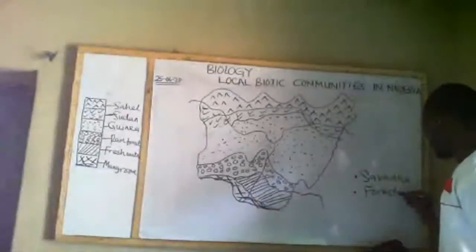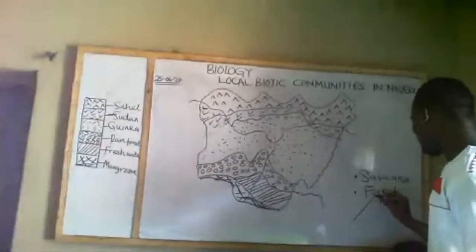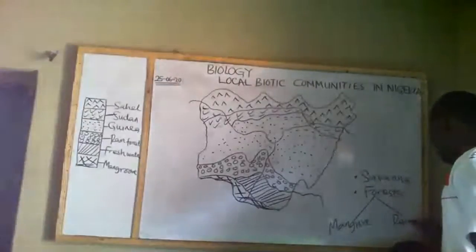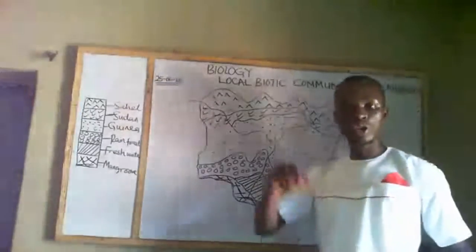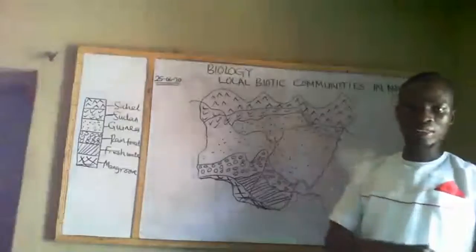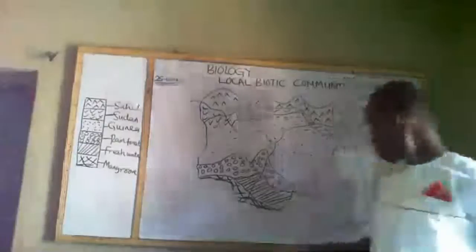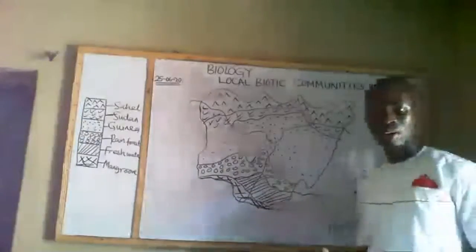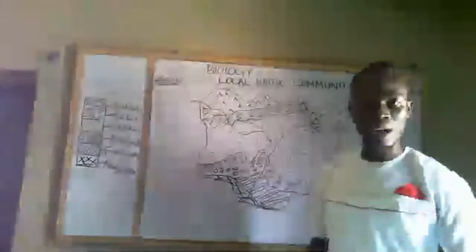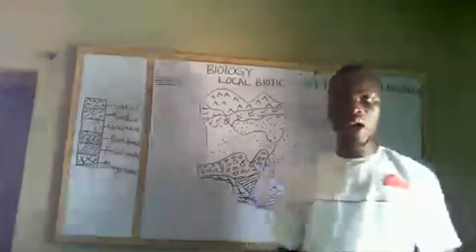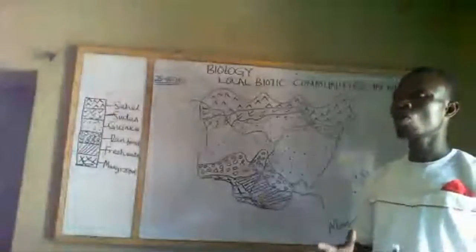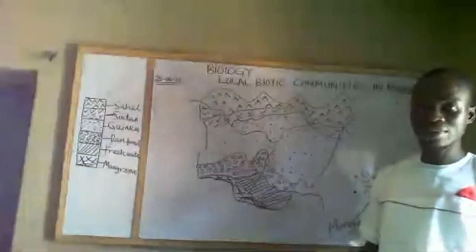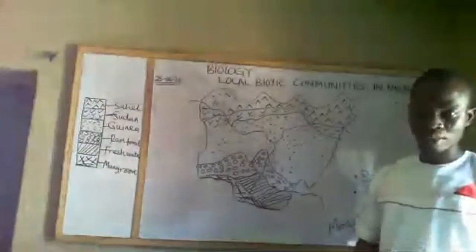Let me start with forest vegetation. Under forest, we have mangrove forest and rainforest — these are the two types we have in Nigeria. Down south, in areas like Rivers and Cross River states, we have mangrove forest. In mangrove forest, you will see a waterlogged area of land inhabited by plants and animals. The common plant species in mangrove are red and white mangroves. Animals found there include kingfisher, crabs, and snakes.